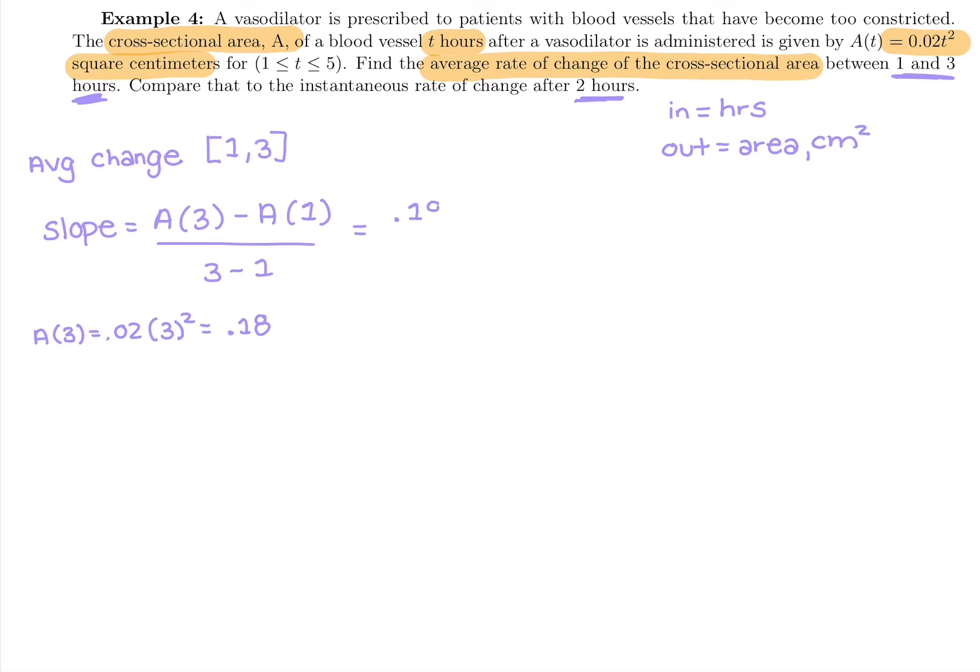So I have 0.18 here for A of three minus A of one. I'm going to grab my calculator, plug in A of one. It's 0.02 times one squared, which one squared is one times 0.02 is going to be 0.02. All over three minus one is a two hour interval. So the difference in area 0.18 minus 0.02 is going to be 0.16 square centimeters over that two hour interval, which means we get 0.08.